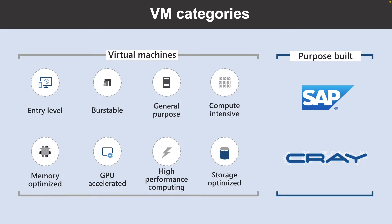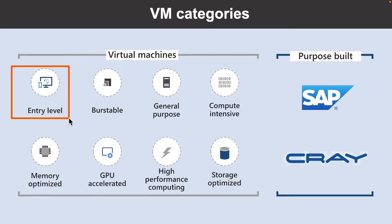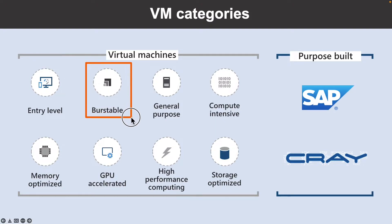Let's look into the virtual machine categories. You can design Azure virtual machines for a wide variety of workloads, from economical entry-level virtual machines to high-performance virtual machines for specialized workloads. Entry-level virtual machines are economical, low-cost VMs for workloads that normally don't use a lot of CPU but occasionally need to burst to handle higher workloads. The next type is burstable — designed for workloads that run for a long period of time using a small fraction of the allocated CPU performance, then spike to the full power of the CPU due to incoming traffic or required work.